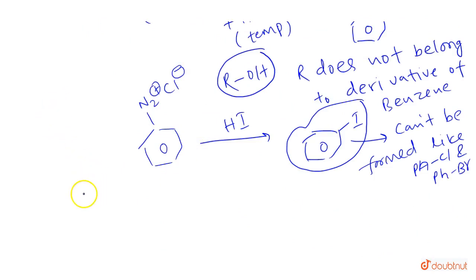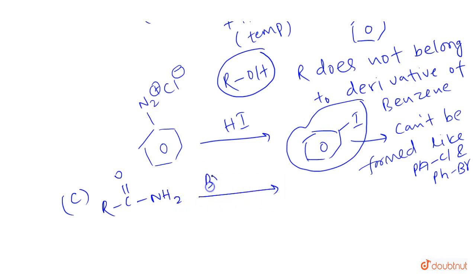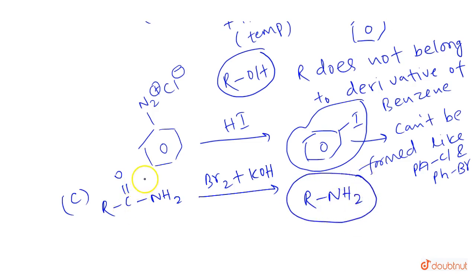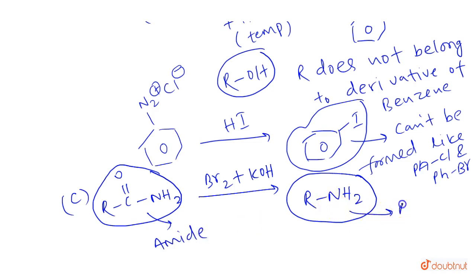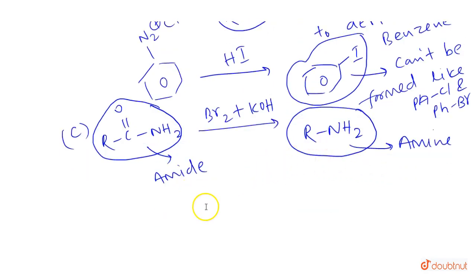The Hoffmann bromamide reaction is used to prepare an amine from an amide. The amide, RCONH2, when made to react with Br2 plus KOH, produces RNH2. Generally, a primary amine is produced in this reaction.